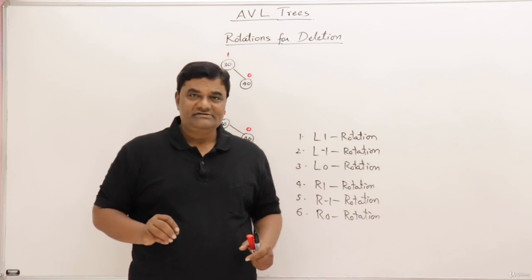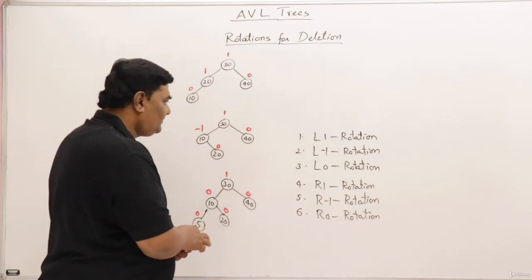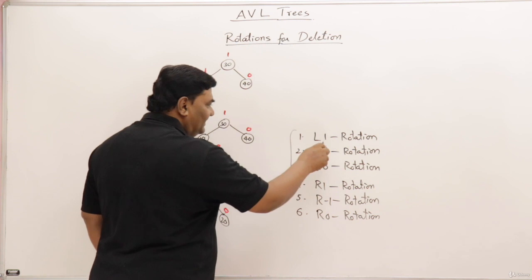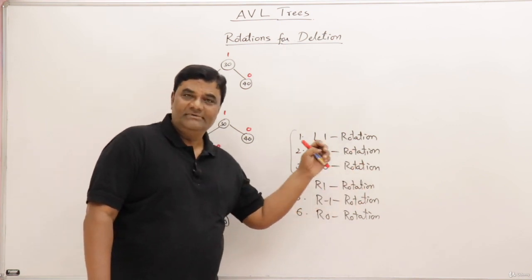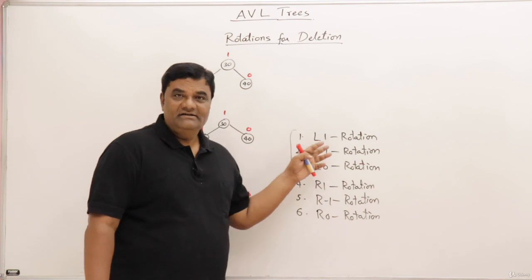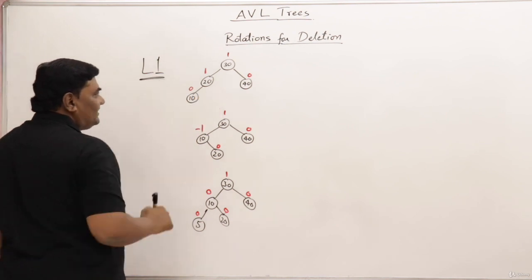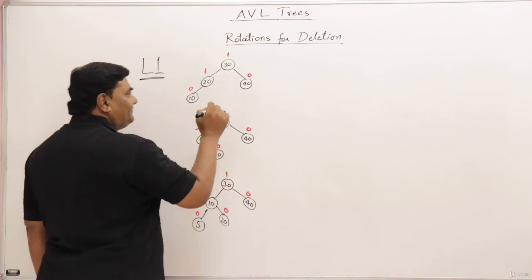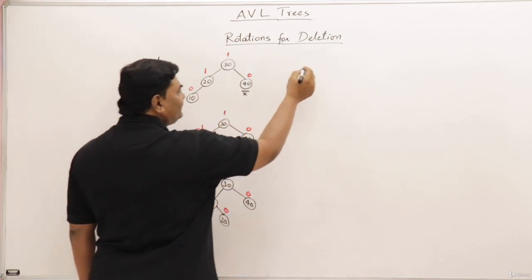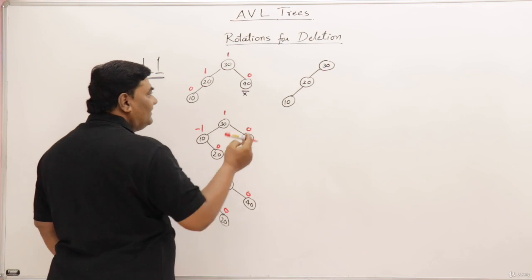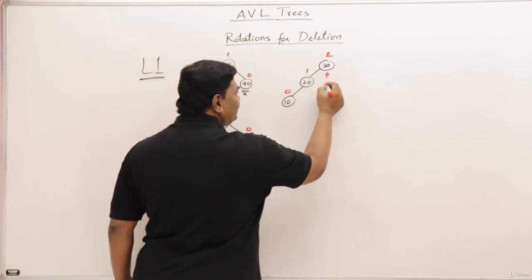Don't panic — these six rotations are not new. In insertion we saw four rotations: two single and two double. The same rotations are performed but with different names. These six names help identify which rotation should be performed. We'll look at the first three: L1, L-1, and L0 rotations, then R1, R-1, and R0. For L1 rotation, suppose we are deleting this node — after deletion, the tree looks like this, with balance factors 0, 1, and this node becomes 2, so it became imbalanced.